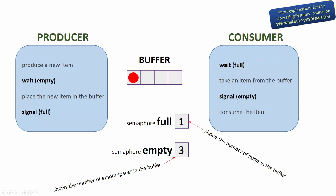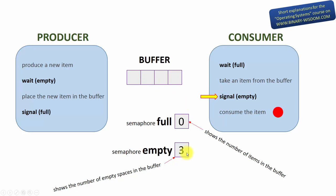The consumer functions in a similar way, but it waits and signals different semaphores. Before taking an item from the buffer, the consumer waits for the semaphore full. It will put the consumer in an inactive waiting state if full is zero and there are no items to take. But if some items are in the buffer, the wait command decreases their number by one, which is correct because the consumer will take one item. Once the consumer takes one item from the buffer, it must increase the number of empty spaces and wake the producer up if it is waiting for an empty space — both done with a single signal empty command.